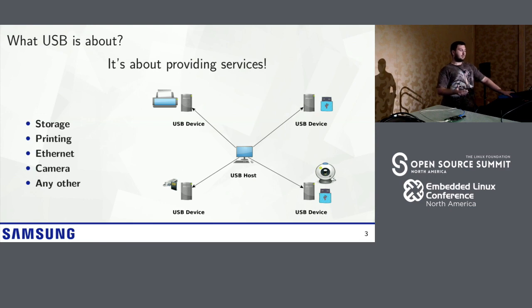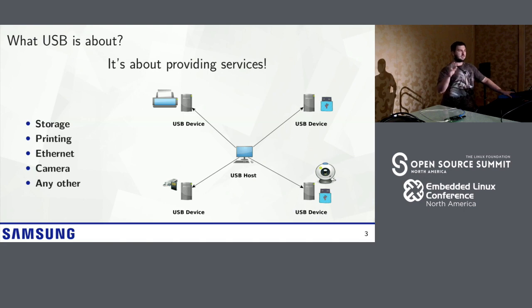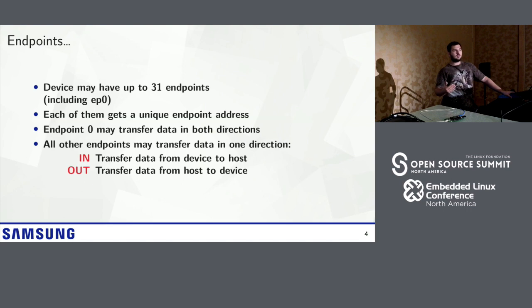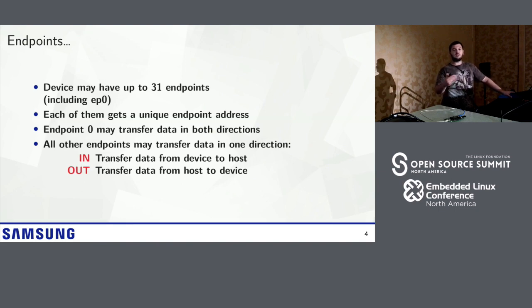If we are talking about providing multiple services from the same device, we need some kind of abstraction, like we have ports in the Internet. In USB, the same type of abstraction is called endpoints. A single USB device may have up to 31 endpoints, including endpoint 0. Endpoint 0 is the only one which is mandatory and the only one which can transfer data in both directions.